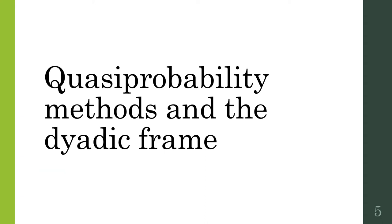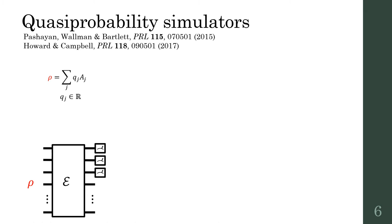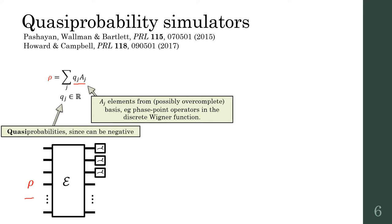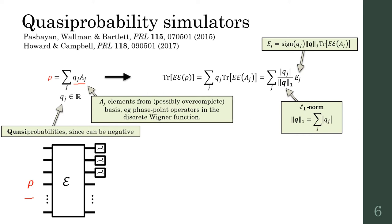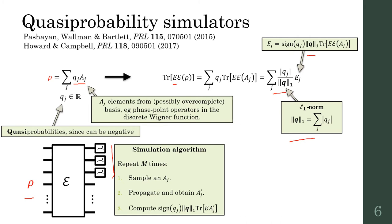Now we'll focus on quasi-probability methods and the dyadic frame simulator. The central idea in previous work has been that the density operator for the initial state of a quantum circuit is decomposed as a real linear combination of usually Hermitian trace-1 operators from some possibly overcomplete basis. Since coefficients can be negative, it's a quasi-probability distribution. To estimate the expected value of an observable at the circuit output, we can renormalize the distribution as a probability distribution over elements with magnitude increased by the L1 norm of the distribution. The L1 norm quantifies the amount of negativity in the decomposition.